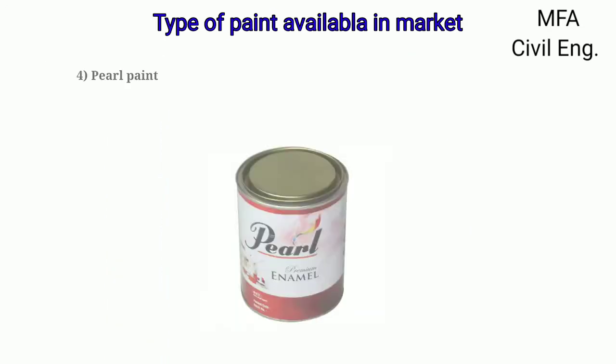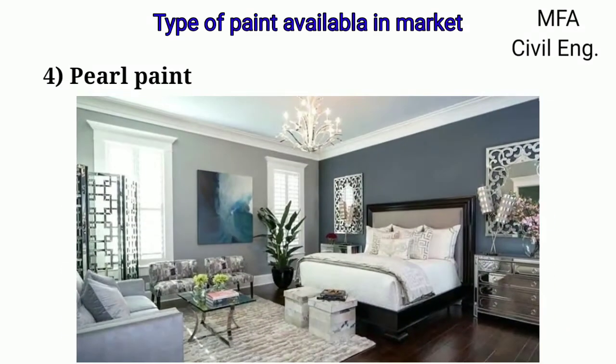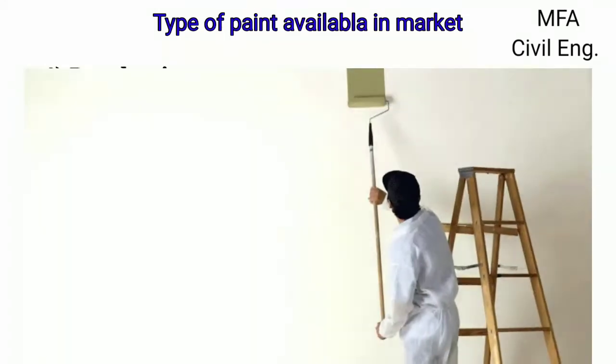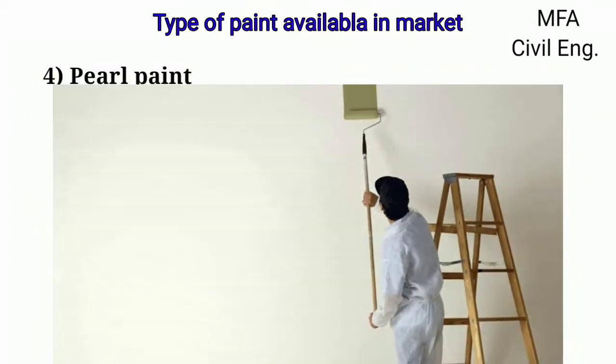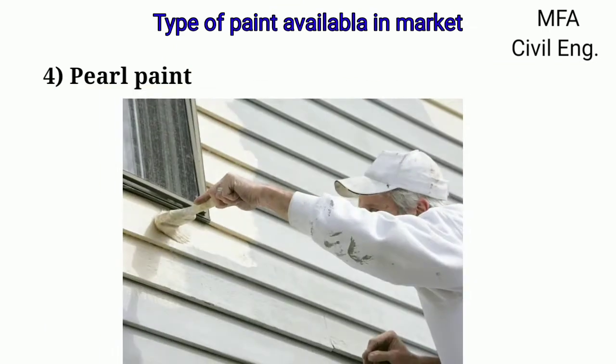Pearl paint provides an eggshell finish to the surface with more shine and resistance to cleaning. These paints are ideally used for coating stucco, machinery work, brick wall, and wooden siding.